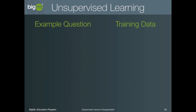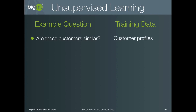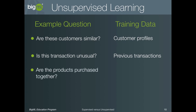Let's consider the types of questions that can be answered with unsupervised learning and the type of data you would need to provide. You could ask: are these customers similar? — which would require training with data containing customer profiles. Or perhaps: is this transaction unusual? — like the anomaly detection example we saw, trained with a list of previous transactions. Or: are these products purchased together — like coffee and milk, or peanut butter and jelly? To find these patterns, we would train with examples of previous products that were purchased together.